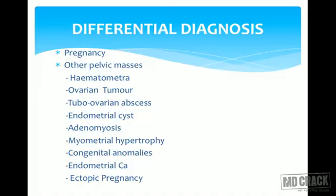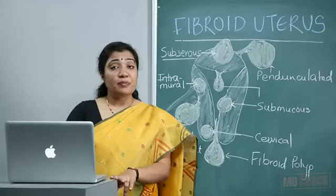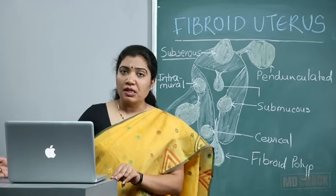Differential diagnosis: fibroid occurs in reproductive age group — always rule out pregnancy first, as missing a pregnancy would be a serious error. Other differentials include hematometra, ovarian tumors, tubo-ovarian abscess, endometrioma, adenomyosis, myometrial hypertrophy, congenital anomalies like bicornuate uterus (one horn felt as a mass), endometrial pathology, and ectopic pregnancy. Management will be covered in the next session. Thank you.